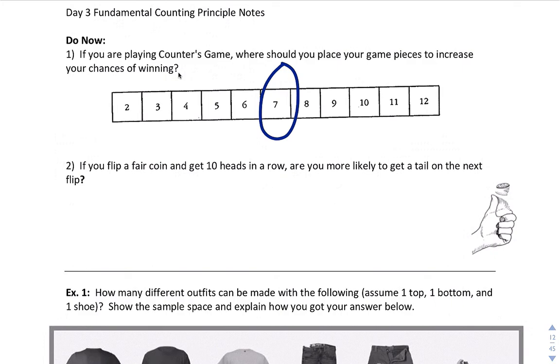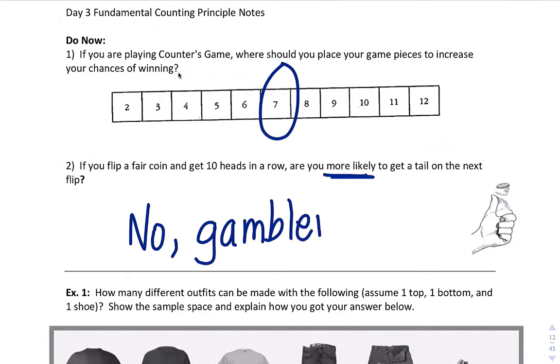How about number two? If you flip a fair coin and get ten heads in a row, are you more likely to get a tail on the next flip? And here the answer is no, you're not more likely. The reason is gambler's fallacy. It's called gambler's fallacy because each flip of the coin is independent. It doesn't matter what happened before. So you're not more likely to get a tails, even if you've got ten heads in a row.